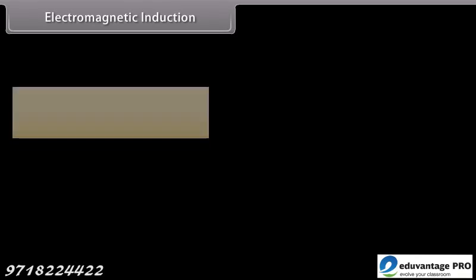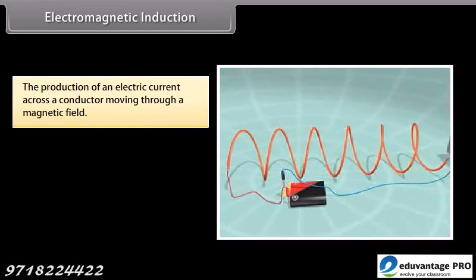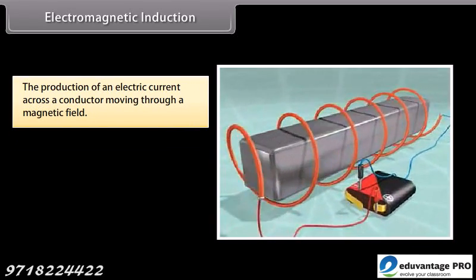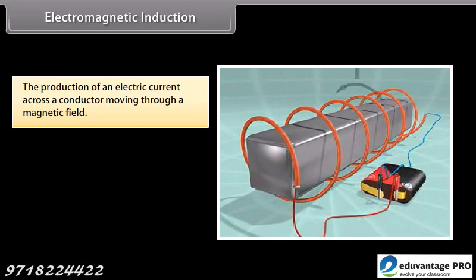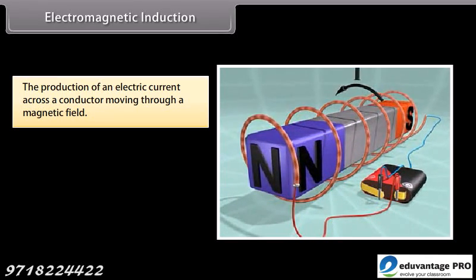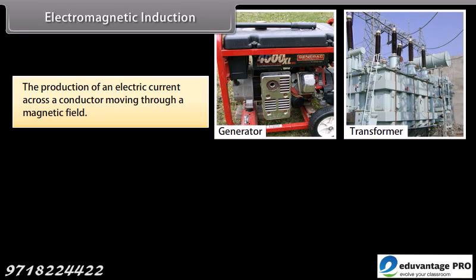Electromagnetic induction. The production of an electric current across a conductor moving through a magnetic field is called as electromagnetic induction. For example, generators, transformers,